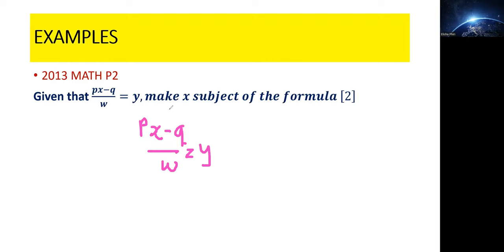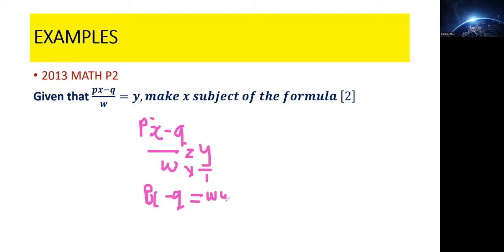So what I want you to do is to make x the subject of the formula — in other words, isolate it so that it stands independently on one side. What you do is first introduce a 1 as the denominator on the other side, then cross-multiply to get rid of the fractions. So 1 times that gives us px minus q, which equals wy.